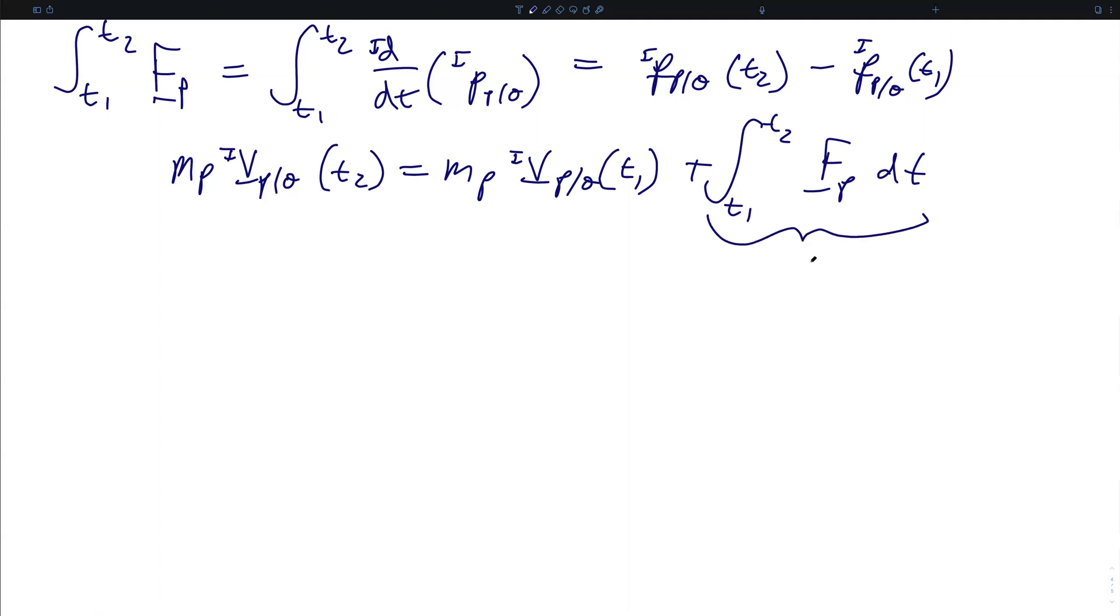And this integral is the quantity that we call the linear impulse, which we will denote as F over bar sub P between times T1 and T2. If this force F sub P is nearly constant in time, and if the time interval is very short, then we can approximate this linear impulse as just F_P delta T, where delta T is T2 minus T1.